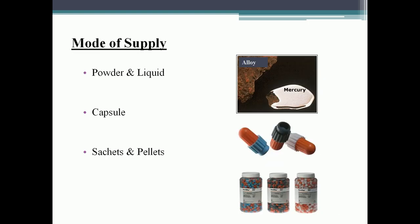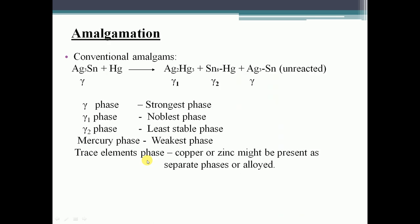Mode of supply: amalgam is supplied in the form of powder and liquid, and is also available in capsules, sachets, and pellets. Amalgamation is a very important topic. Many questions are asked about the phases — gamma, gamma 1, and gamma 2 — so please understand carefully.